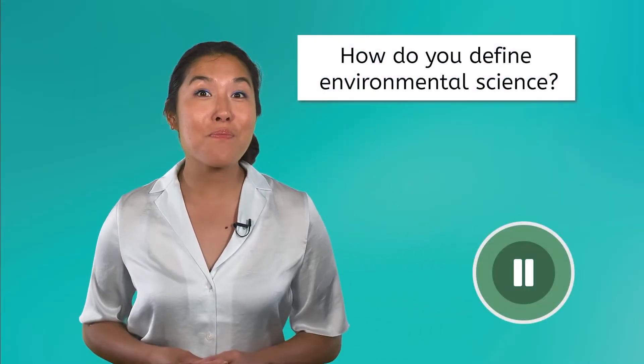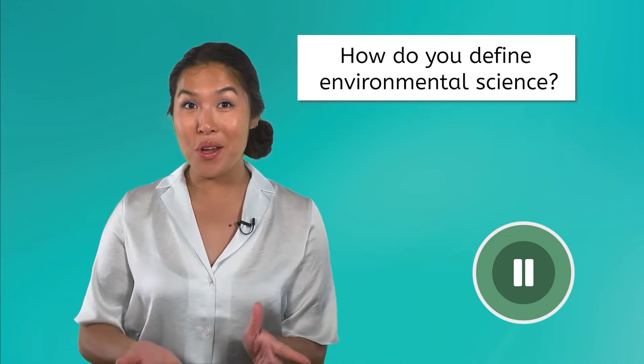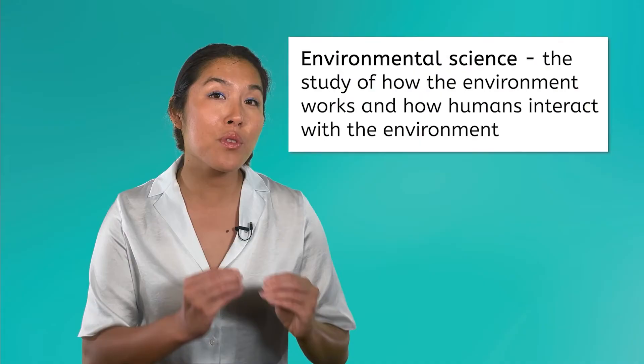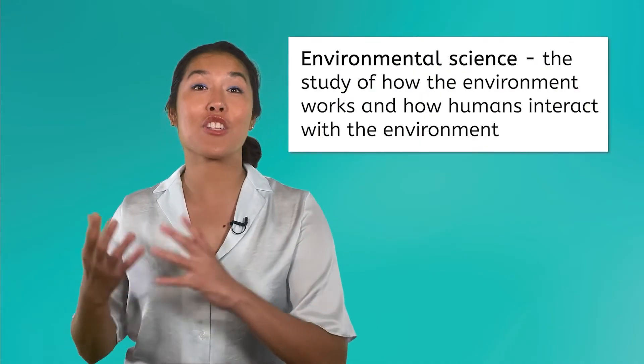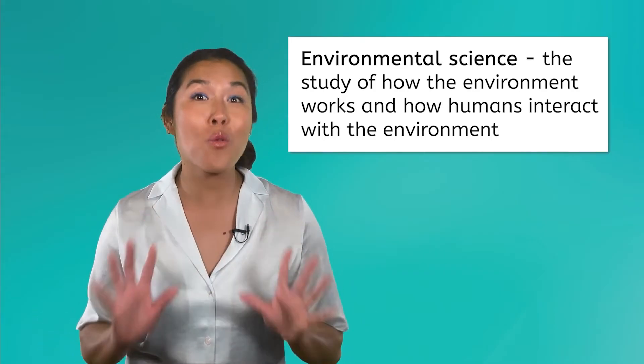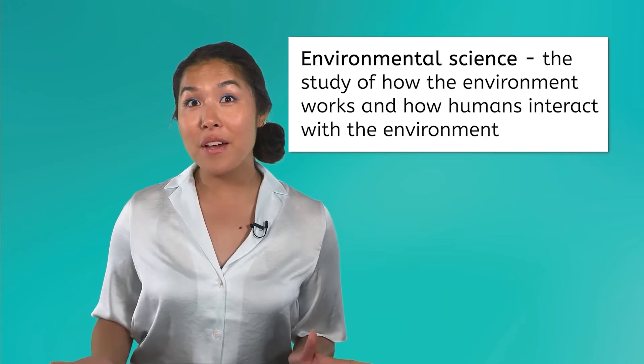Environmental science is something that everyone has heard of, but it probably has a slightly different meaning to every person. Before we get too far into this lesson and this course, I want you to take a moment to define what environmental science means to you. Go ahead and pause the video and write a definition in your notes. In this class, we are going to define environmental science as the study of how the environment works and how humans interact with the environment. You may have a different definition in your notes, and that is totally okay. Both definitions can be correct.